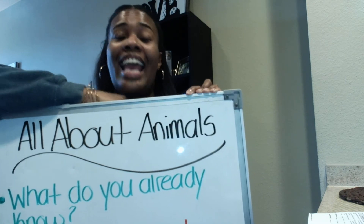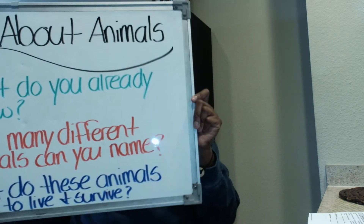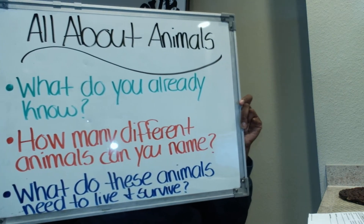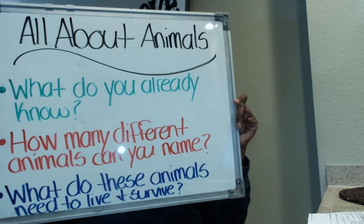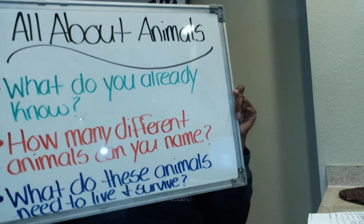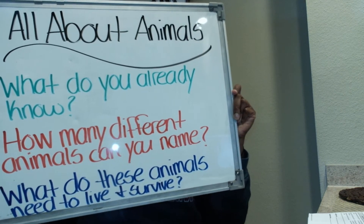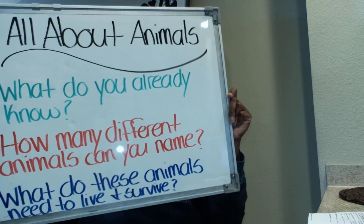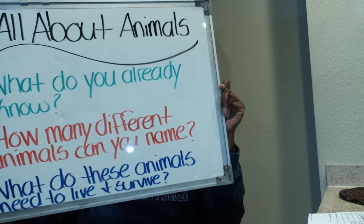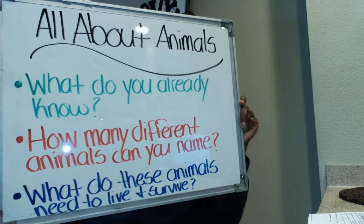Remember, it can be any animal. Let's go over those again. The first thing you're going to do is tell me what you already know about animals. Second thing: how many different animals can you name? Third thing: what do these animals need to live and to survive?